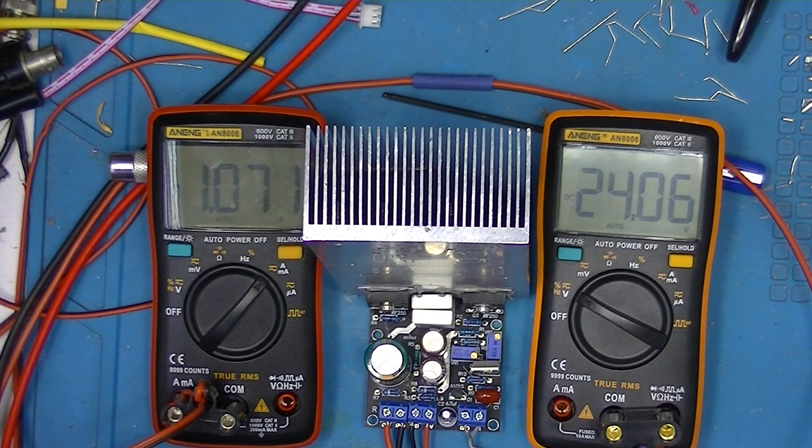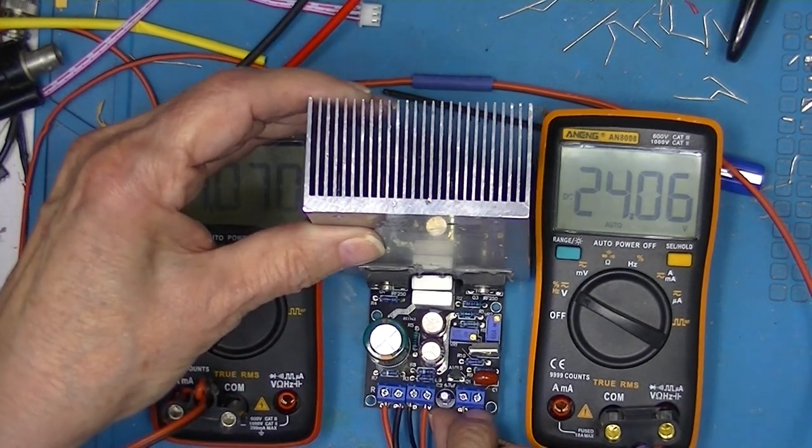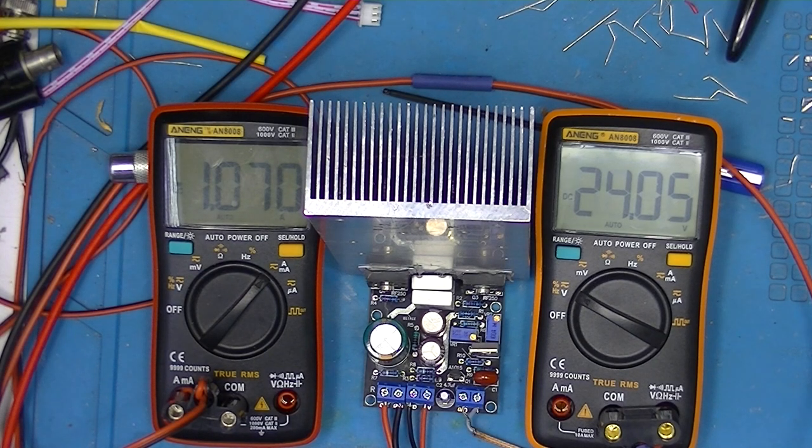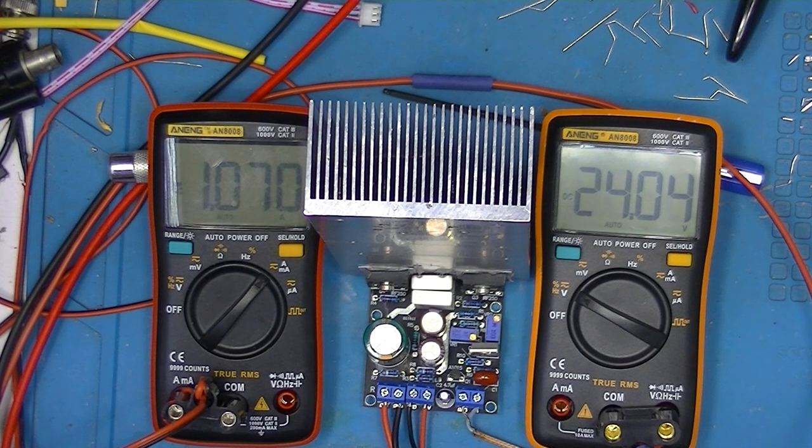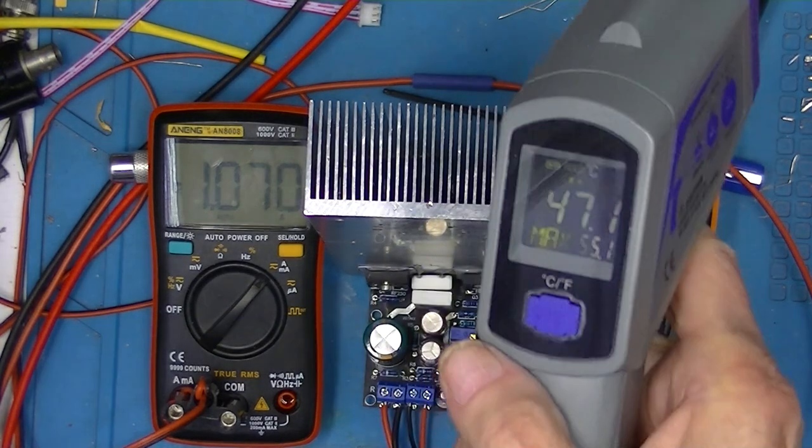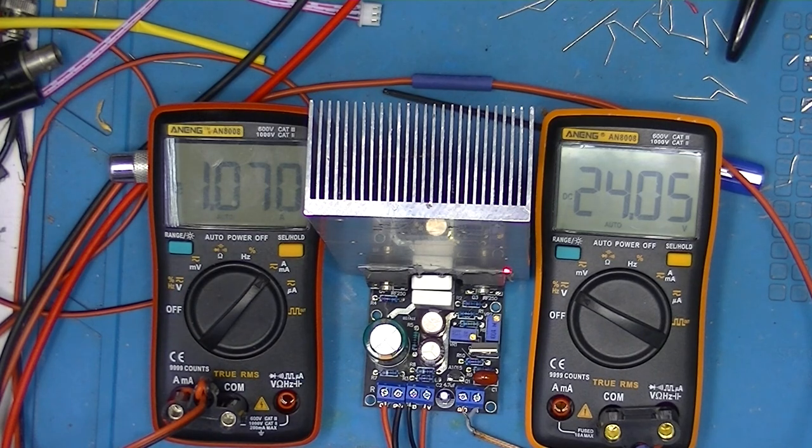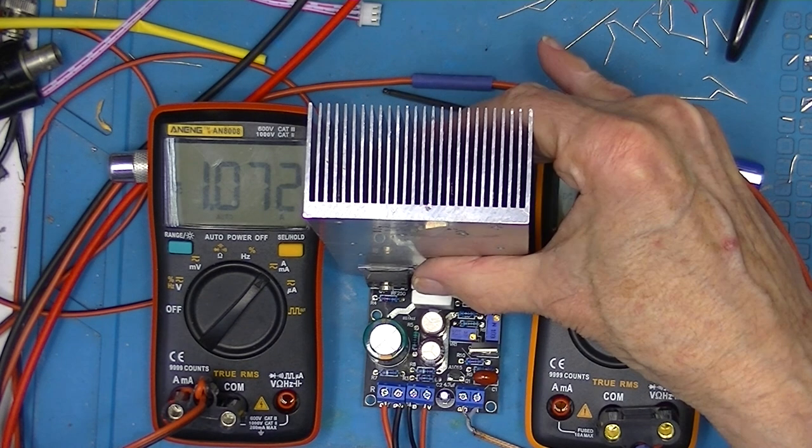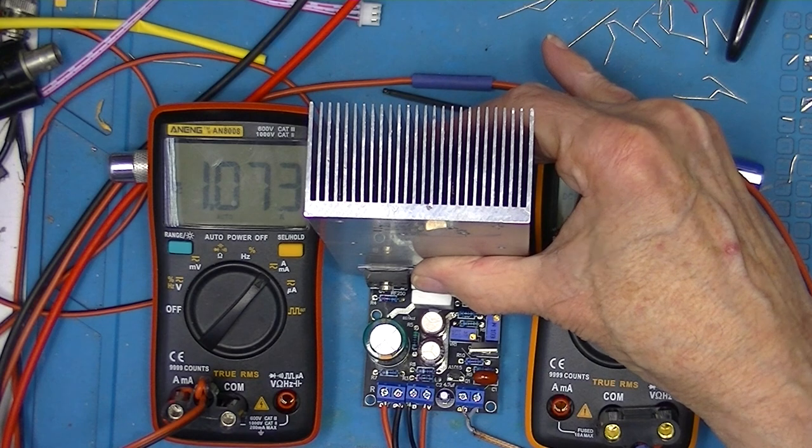This is amplifier number four, same test jig. I've set it at 24 volts, approximately one amp. It's been running now for almost an hour. The transistors, the body of the transistor reads around 40, worst case 47°C. The heat sink itself is much cooler, around 30 degrees C. I certainly have no problem at all putting my hand on the heat sink.